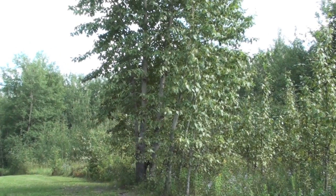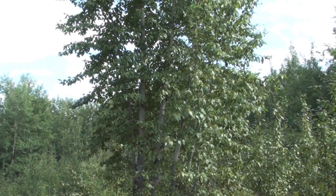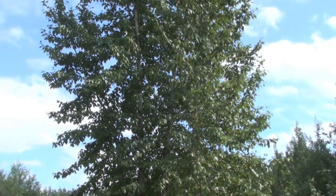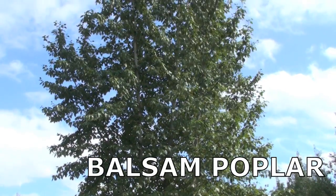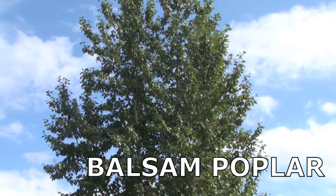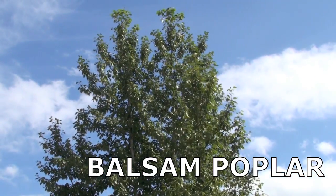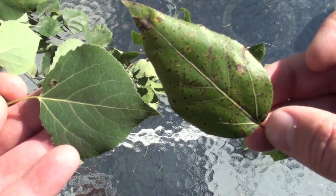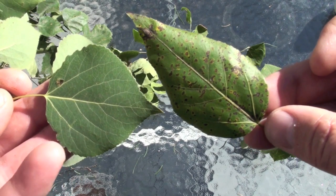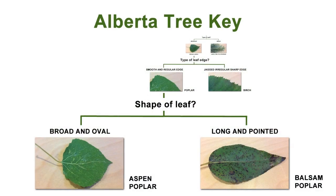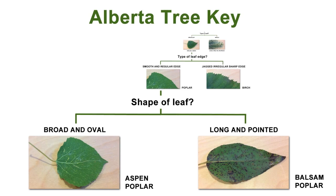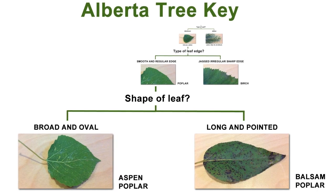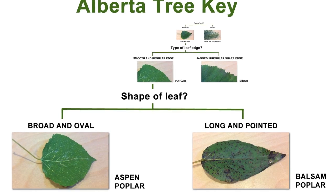So now we have a way to tell poplar and birch trees apart on our key — by looking closely at the edge of the leaf. We can use our key to identify even further. It turns out there are two species of poplar native to Alberta: the aspen poplar and the balsam poplar. The balsam poplar is also common all over Alberta, especially in wetter areas. Looking closely at the leaves, there is a difference in leaf shape. If the leaf is broad and oval, it's the aspen poplar; if the leaves are longer and more pointed, we have the balsam poplar.